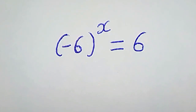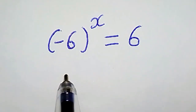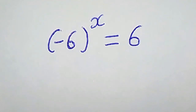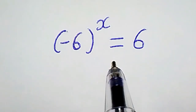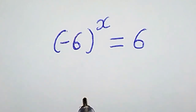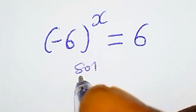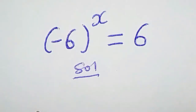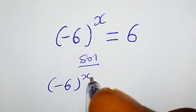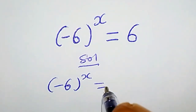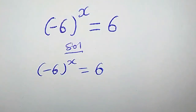Hey guys, in this video we are going to be solving a challenging exponential equation. Minus 6 to the power of x is equal to 6. How do we solve for x? Let's get down the question first: minus 6 to the power of x equals 6.